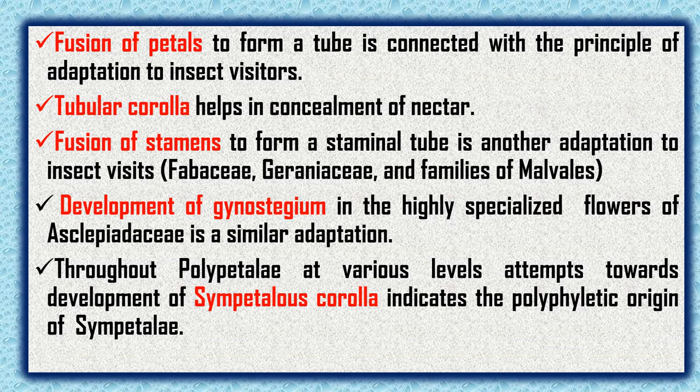The third tendency — fusion of floral parts — subserves both fundamental principles of floral evolution. Fusion of floral parts saves space and material, as seen in fusion of carpels with the receptacle in Rosidae, Saxifragaceae, Rosaceae, Cornaceae, and Podostemaceae. Material economy is achieved by development of short filaments or subsessile anthers in epipetalous flowers of Primulaceae, Myrsinaceae, and Plumbaginaceae. The fused petals of a tubular corolla help conceal nectar, and fused stamens forming a staminal tube, as in Malvaceae and Asclepiadaceae, are further adaptations to insect visits.